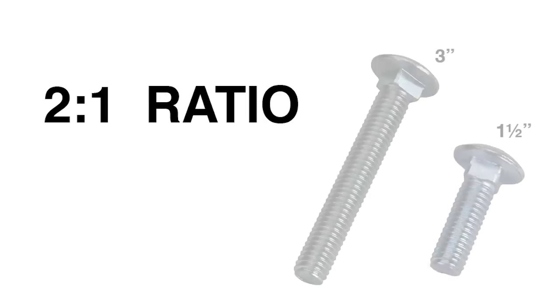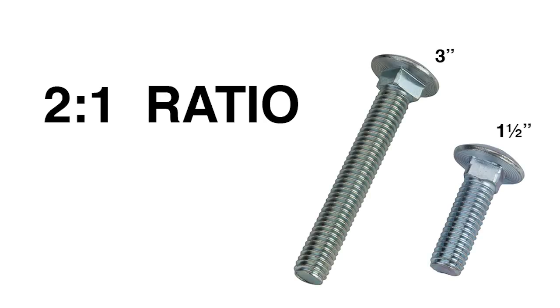Now, do the same for the other end of the flagpole. Remember, it's best to have a two to one ratio on either end of the flagpole. So, for example, if you use a three inch carriage bolt on one end, you should use a one and a half inch carriage bolt on the other end.